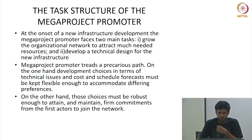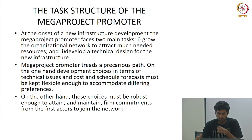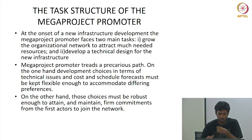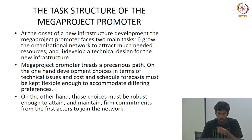The task structure of the mega project promoter is at the onset of new infrastructure development. The mega project promoter has two main tasks: first, grow the organizational network to attract much-needed resources; and second, develop the technical design of the new infrastructure. Mega project promoters face a trade-off where development choices in terms of technical issues, cost, and schedule forecasts must be kept flexible enough to accommodate different preferences, yet robust enough to attain and maintain firm commitments from the first actors to join the network.